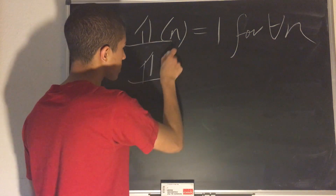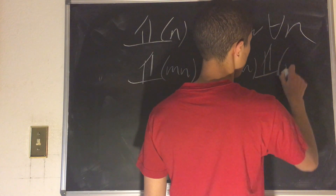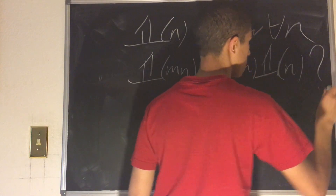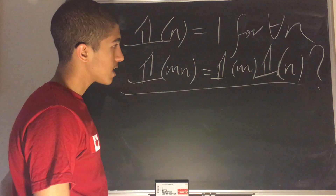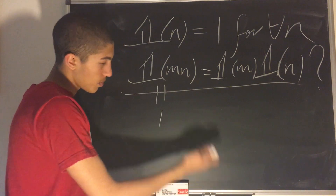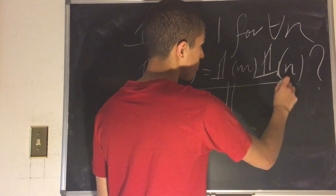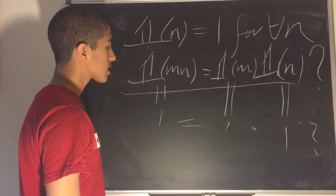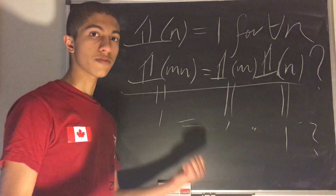Asking whether boldface 1 is multiplicative is equivalent to asking: is 1(mn) equal to 1(m) times 1(n)? Well, 1(mn) is simply equal to 1, because mn is a number. And 1(m) is equal to 1, and 1(n) is equal to 1. So 1 equals 1 times 1 — this condition is most certainly met. We can conclude that boldface 1 is multiplicative.